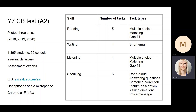The test consists of four parts. The first being the reading test, which has five tasks. The task types used are multiple choice, matching and gap fill, which are the most commonly used task types in foreign language textbooks and exams.